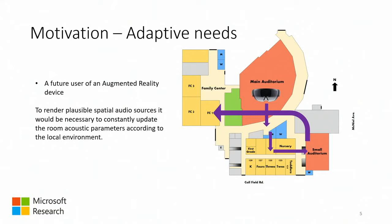Going to the use case of mixed reality, we may want to create an adaptive algorithm that can dynamically adapt to the position of the user within a space. For example, a HoloLens user moves around a school — from an auditorium to a corridor, to a room, back to an auditorium. Each one of these spaces sounds very different acoustically, so it is necessary to capture the parameters describing the local acoustic environment in each space separately.